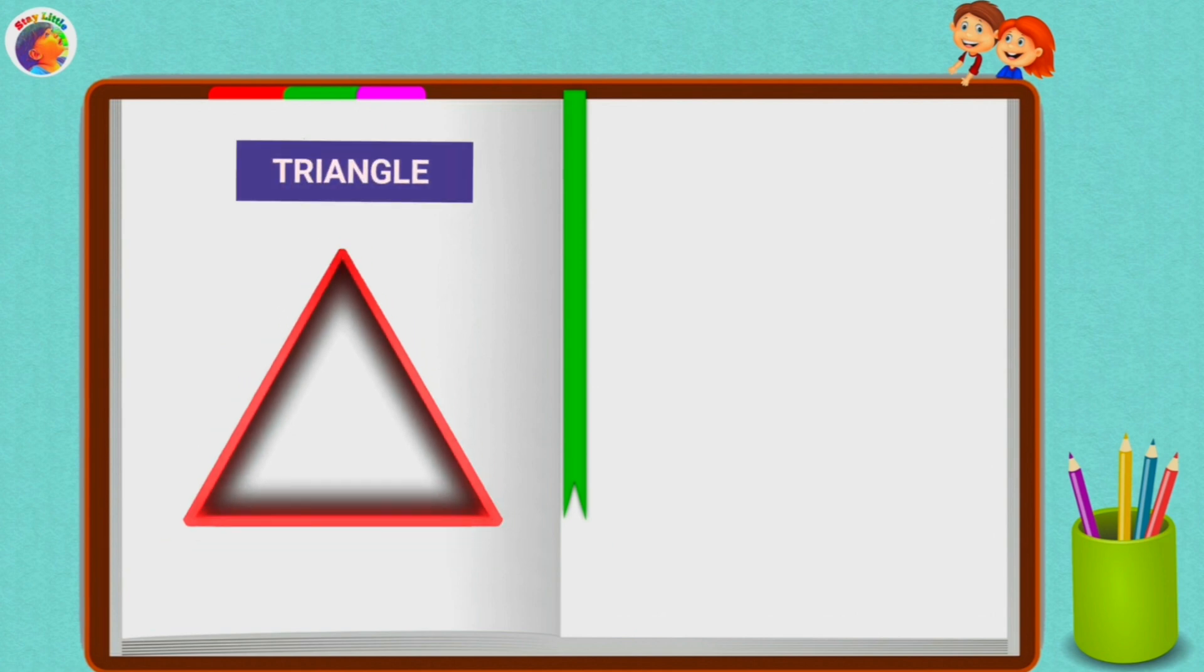Triangle. A triangle has three sides. 1, 2, 3.